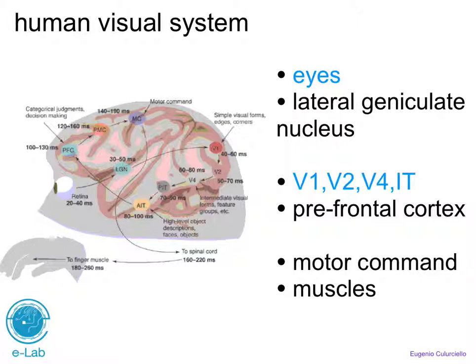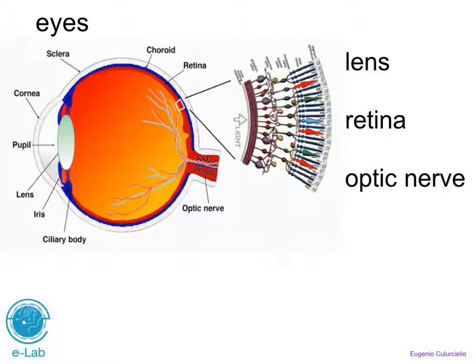We will continue now to study the basic information about the human visual system and its components, in particular the components highlighted in blue in these slides. Eyes are important in the human visual system because they are the ones that decide what information comes from the environment and is represented in the brain. They are the gateway of information — the input.